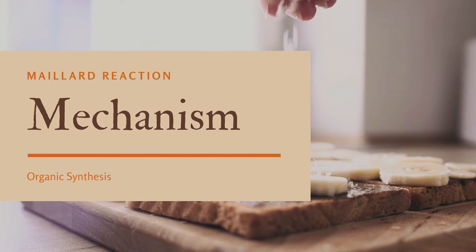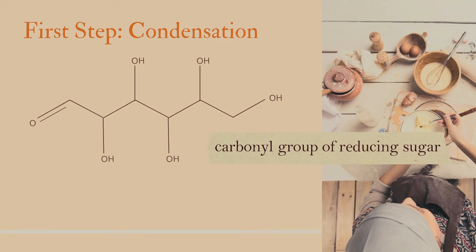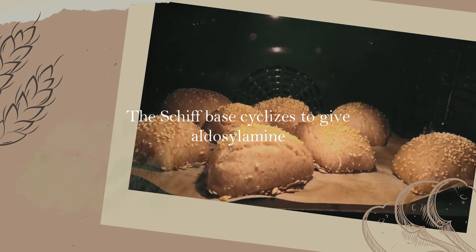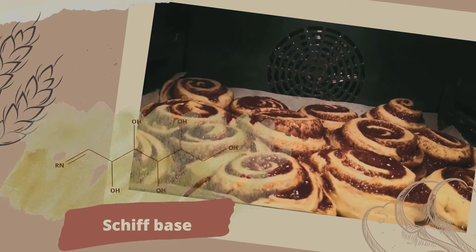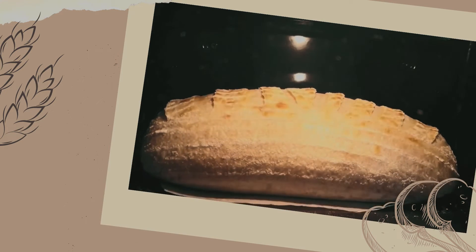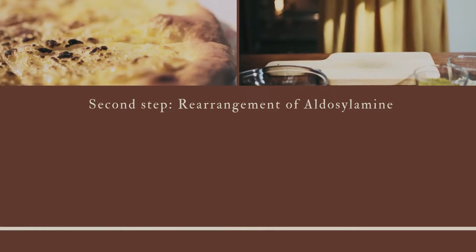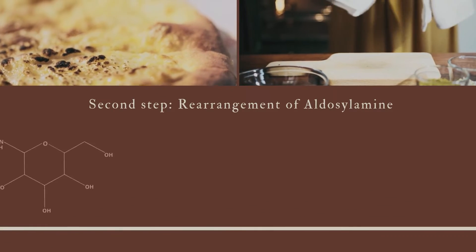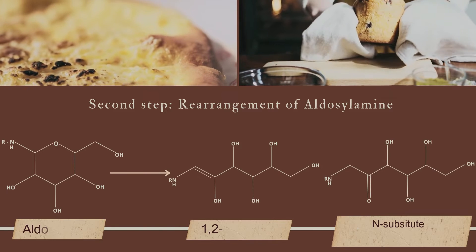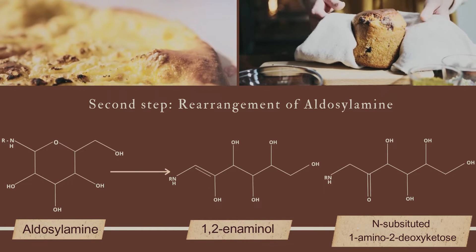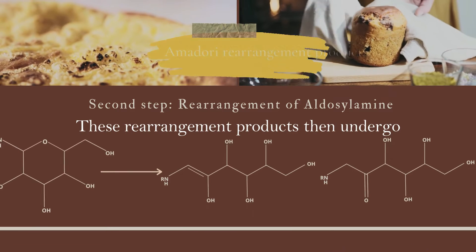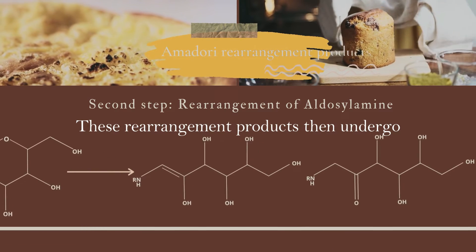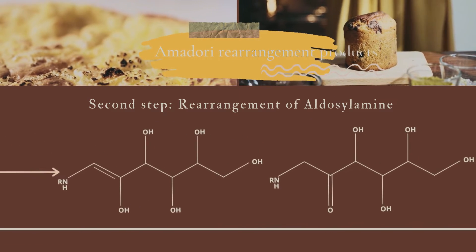The first step is the condensation of the carbonyl group of the reducing sugar with an amino group. This produces a Schiff base, and if the sugar is an aldose, the Schiff base cyclizes to give an aldosylamine. The aldosylamine is then rearranged to give a 1,2-enaminol and its ketoform, known as Amadori rearrangement products.